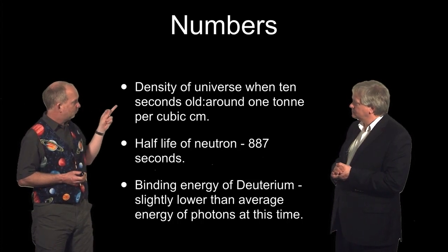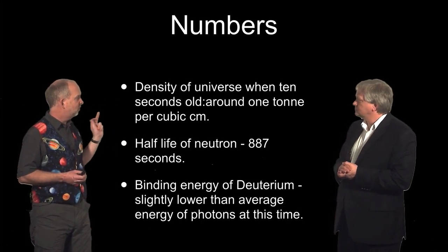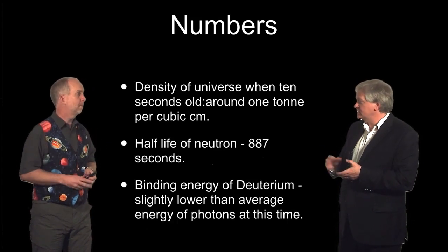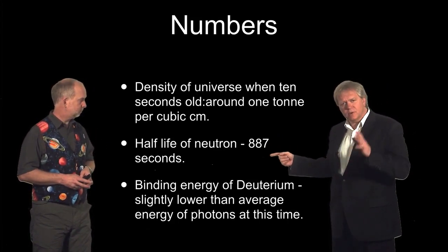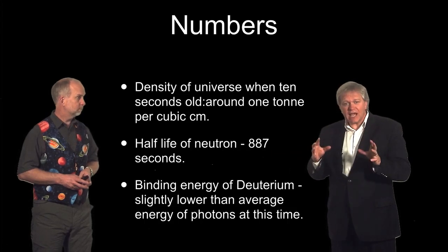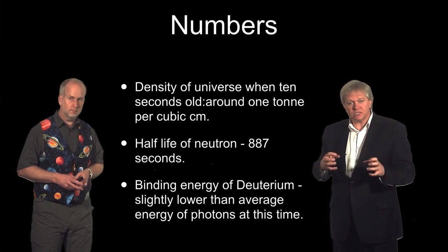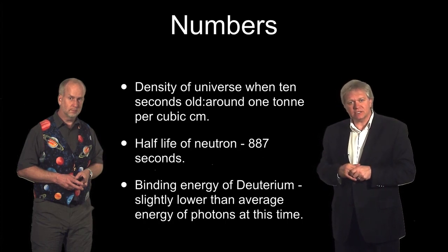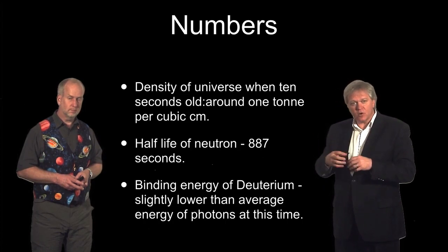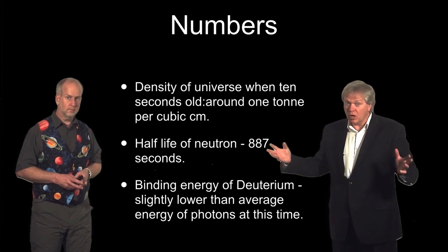So some key numbers. When the universe was 10 seconds old, the density was about 1 tonne per cubic centimeter. That's pretty dense. And another key number is that the neutron, you may not realize this, is not stable unless it's bound in a nucleus. It has a half-life of 887 seconds.